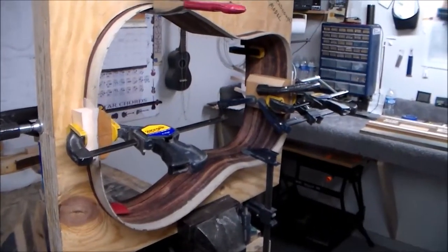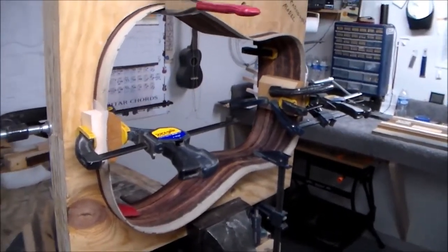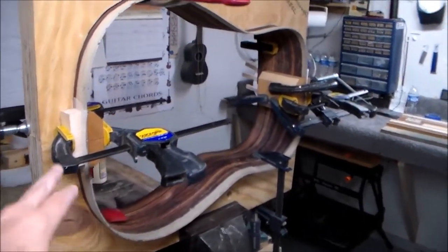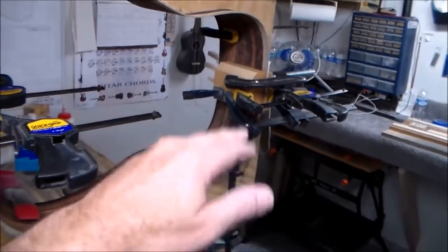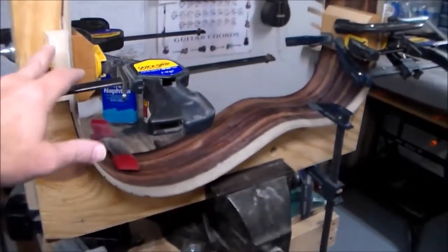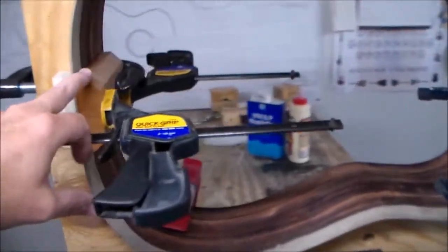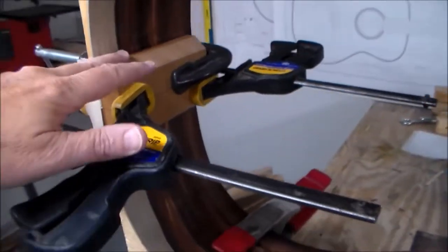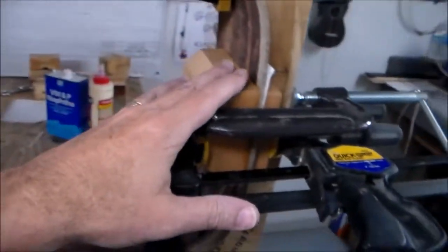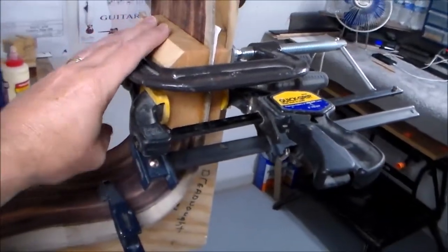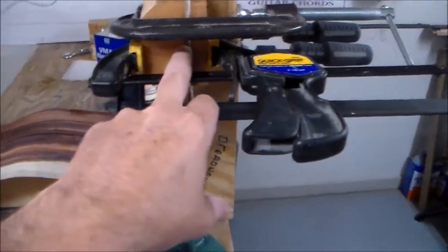Okay, here's the next step in the process. You remember last time we bent the sides, and now what we've done is we've trimmed the sides to the size they need to be and we mated them up in a form. We've got a heel block of wood here at the bottom, we've got a block of wood up here where the neck is going to mount on the guitar, and that helps support everything.